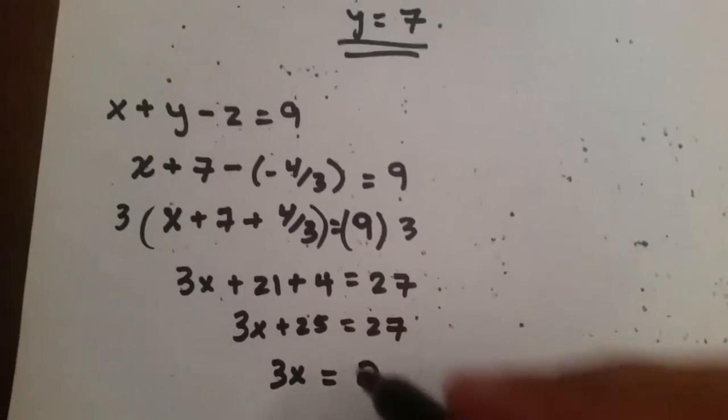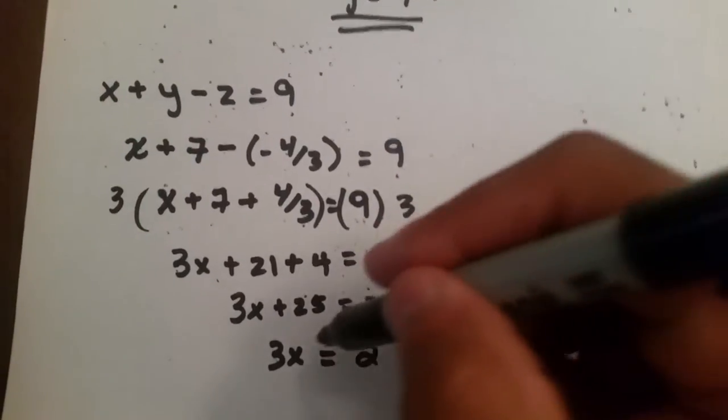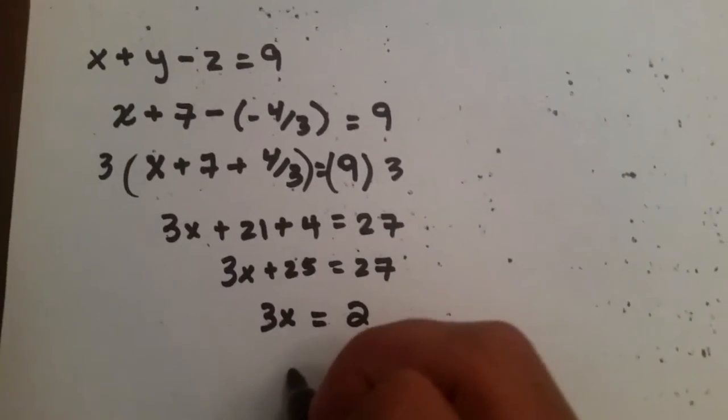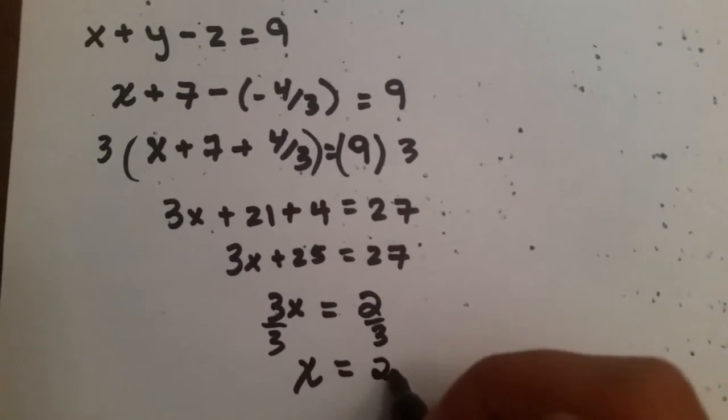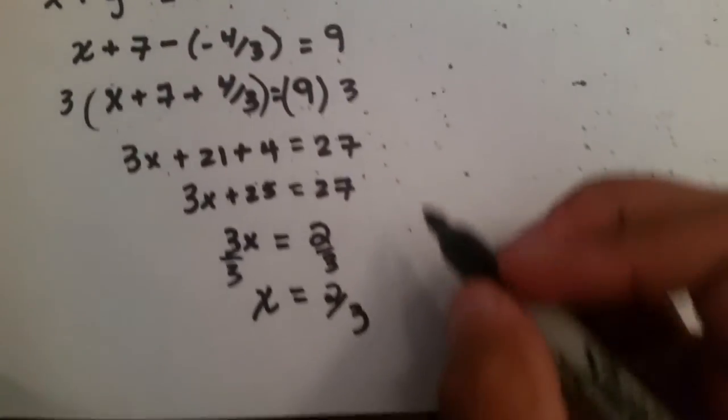And we do 3x, and we subtract 25 from both sides, which will leave us with 2, because 27 minus 25 is 2. And we divide 3 on both sides, and we get x equals 2 thirds.